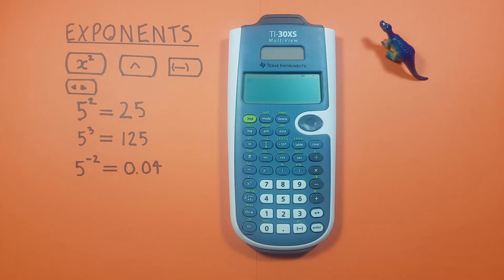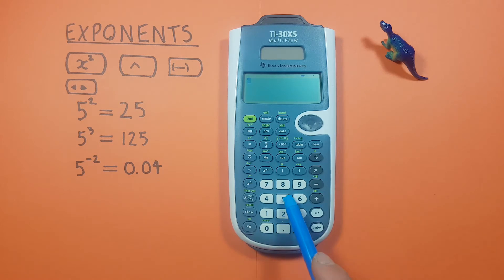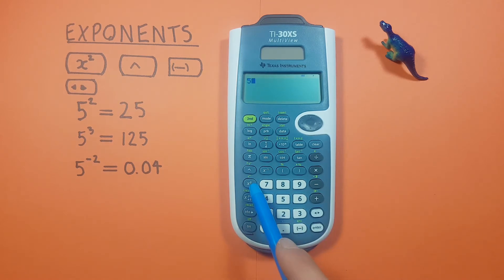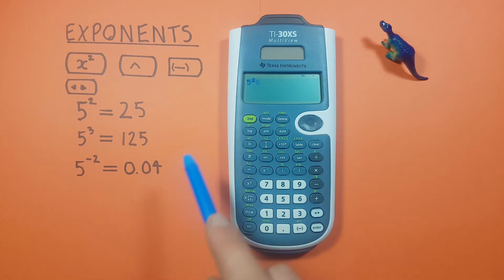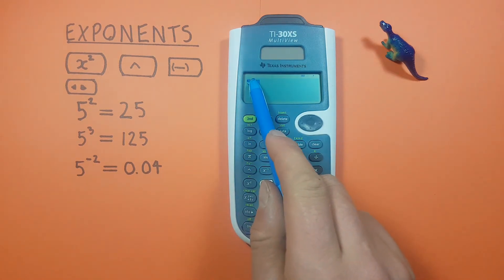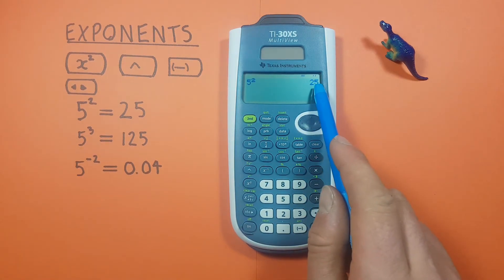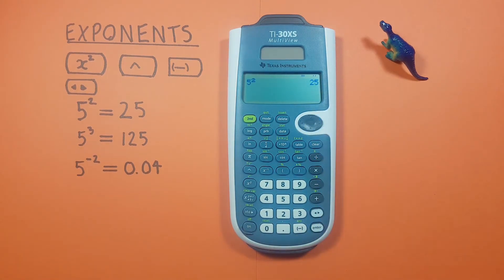To get started, if we just want to square a number like 5 squared, we start by entering the base which is 5 and then hit the x squared key. We see a 2 in the top right corner in the exponent position, and we press enter and get the result of 25, which is correct.